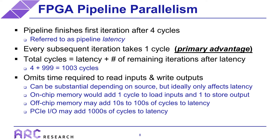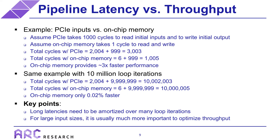This analysis excludes the time required to read inputs and write outputs, which can be substantial depending on the source. However, as long as the I/O bandwidth is sufficient to provide pipeline inputs and outputs every cycle, this time will only affect the latency of the pipeline. For example, if the data comes from on-chip memories, this adds only one cycle of latency to load inputs and one cycle to store outputs, giving a total of 1,005 cycles. Off-chip memory would likely add tens to hundreds of cycles of latency, and PCI Express could add thousands of cycles or more.